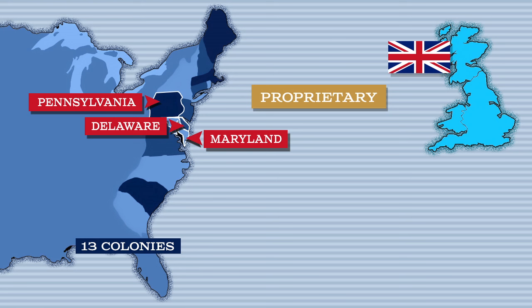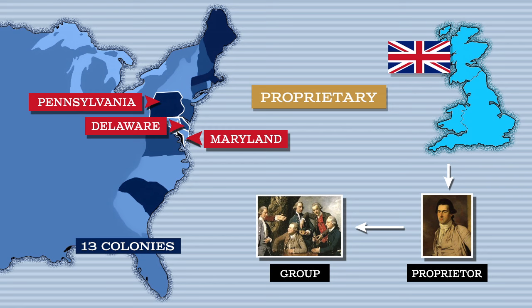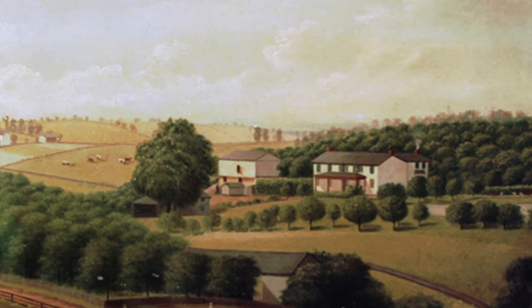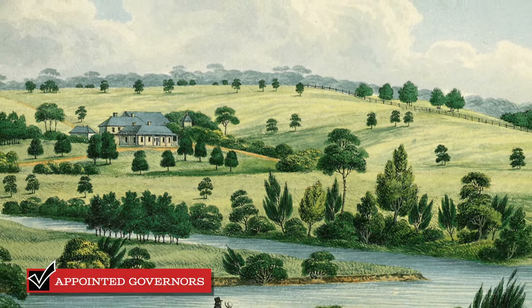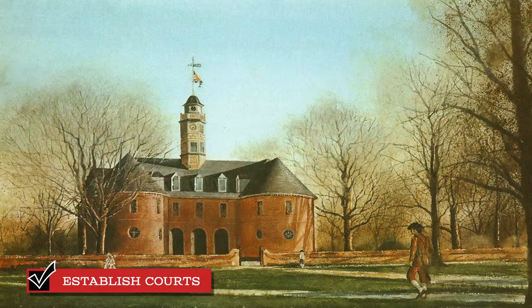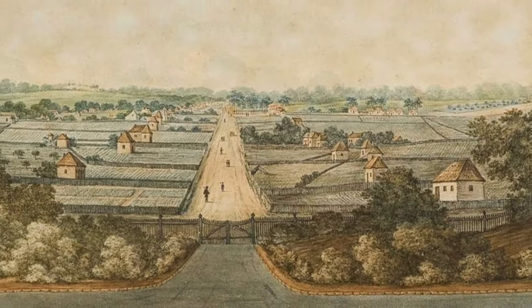In a proprietary colony, the British crown granted a province to proprietors. A proprietor could be an individual or a group authorized to settle the province at their own expense. The proprietors owned the land and were granted full rights of self-government. Proprietors appointed governors and had the authority to establish courts, develop towns, and collect land taxes to recoup their investment.